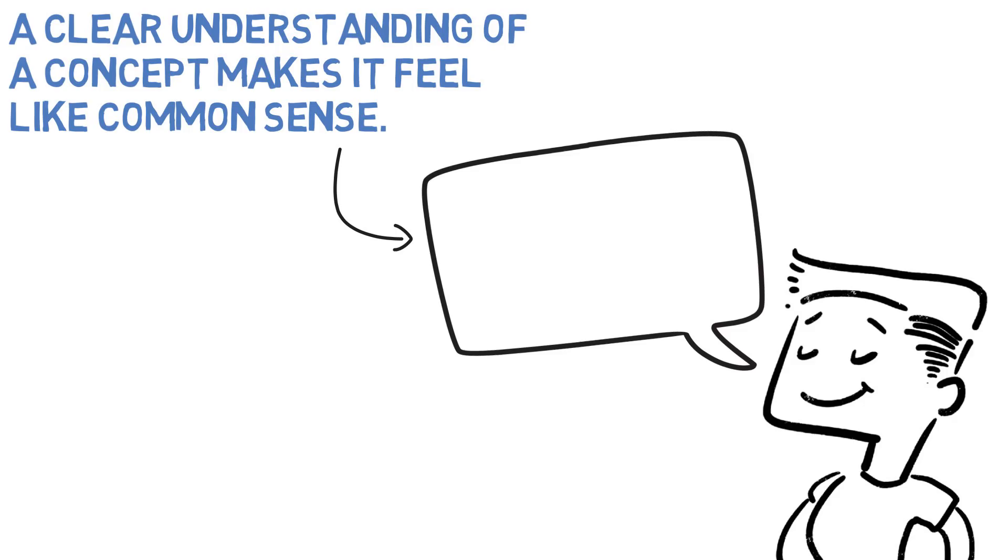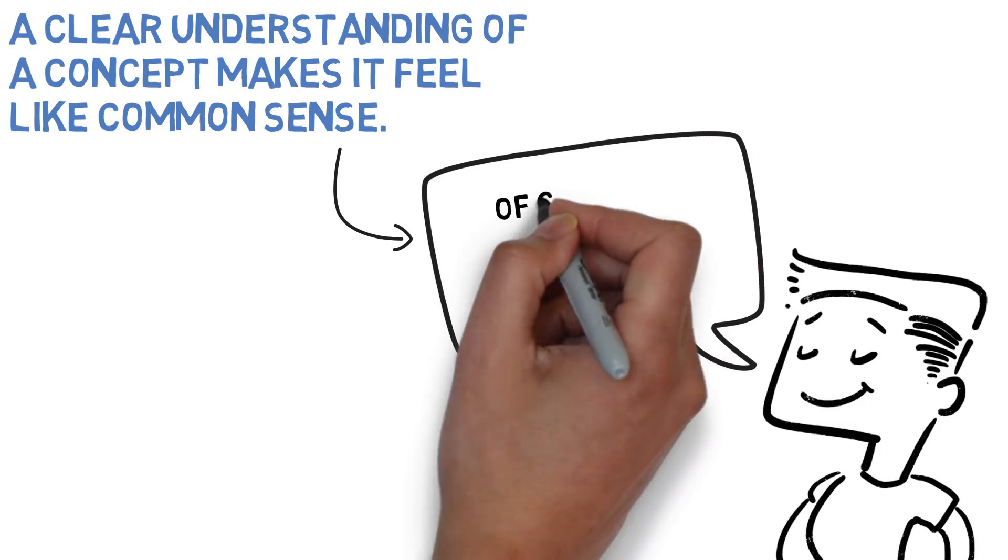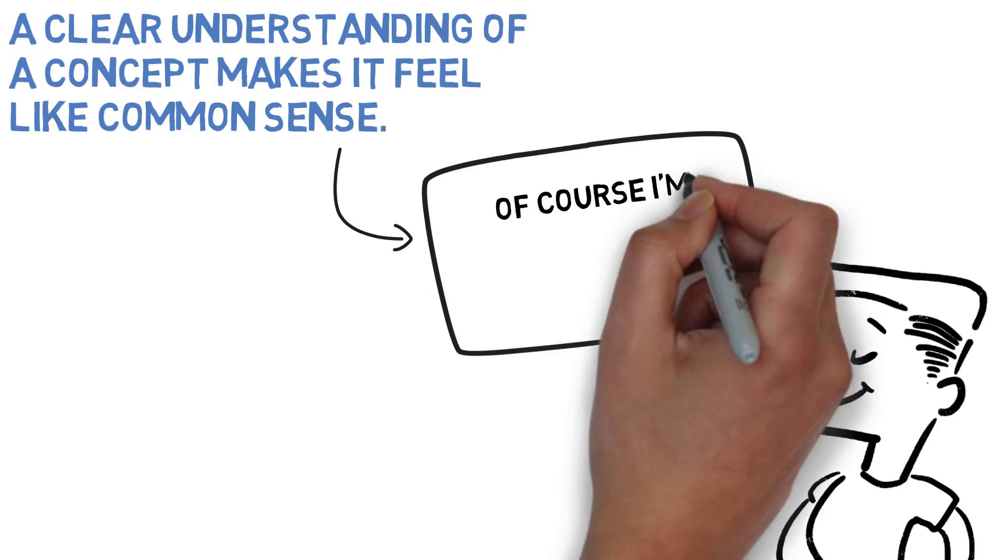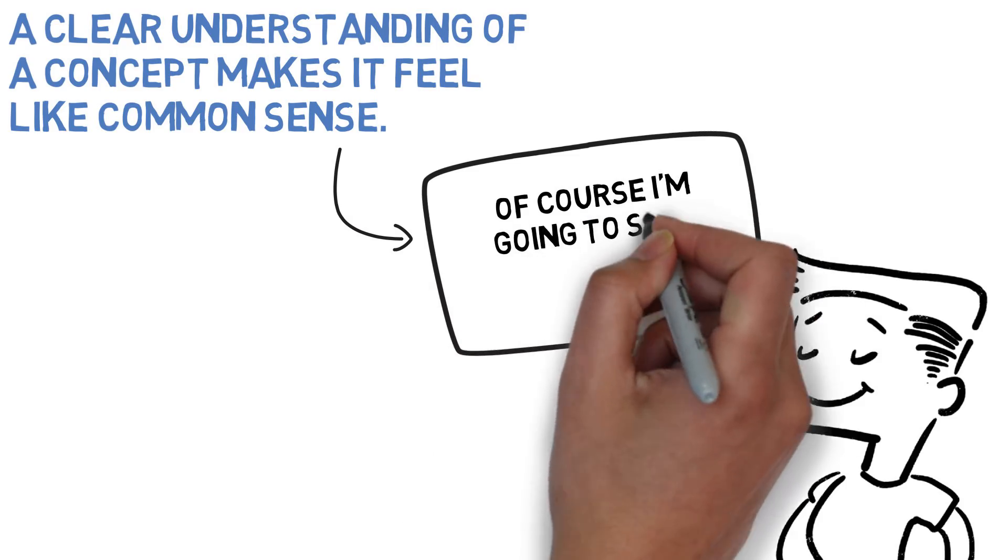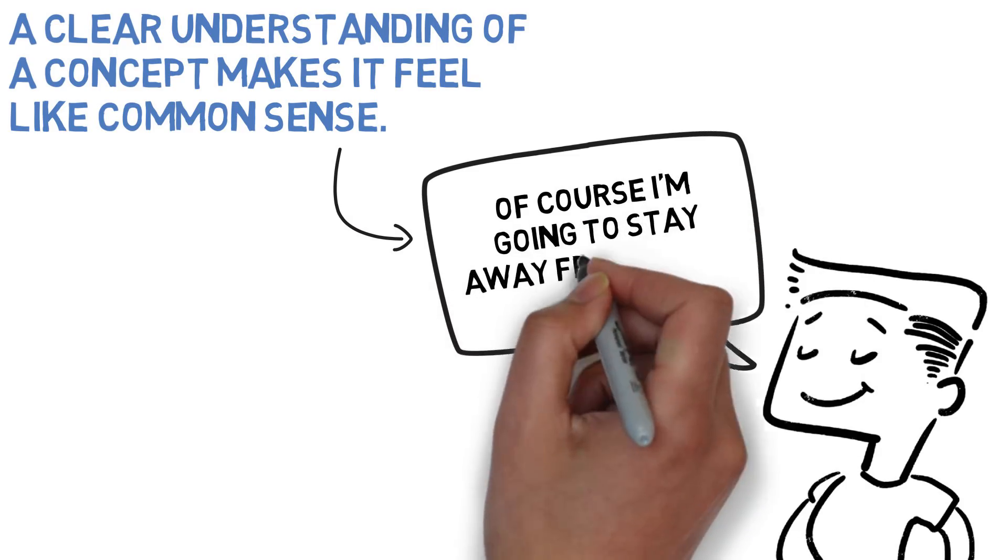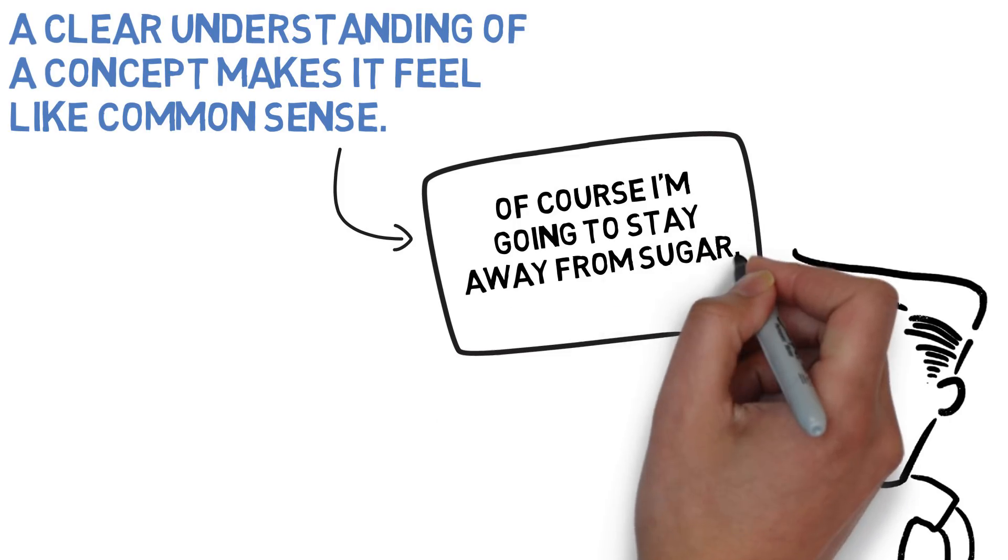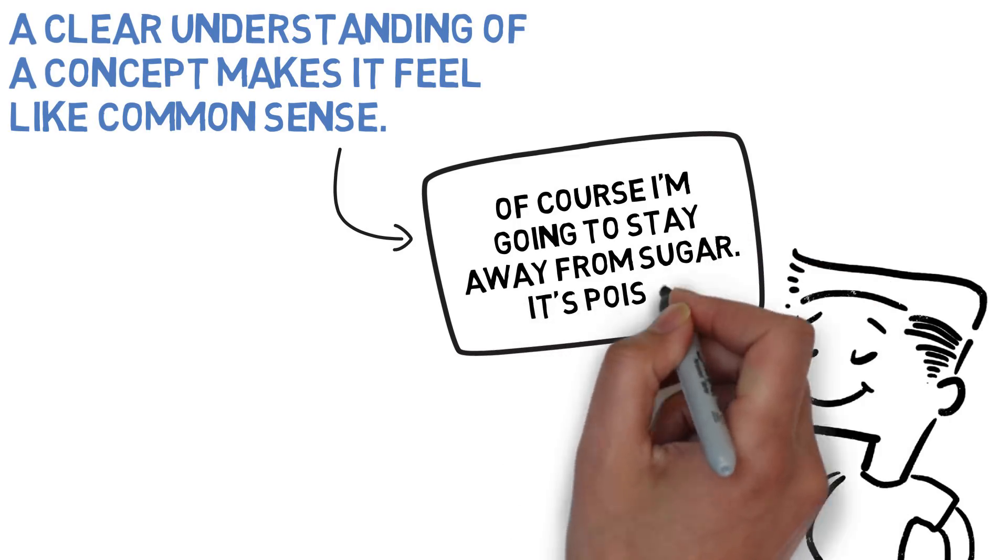For example, if you really sat down and learned about nutrition, and you started to uncover the truth about sugar, you learn about exactly what it does to your body, about how it interacts with your insulin, your brain function, about how it promotes fat storage, and you do this properly to the point where you really understand what sugar does to your body, then it becomes common sense to stay away from it.